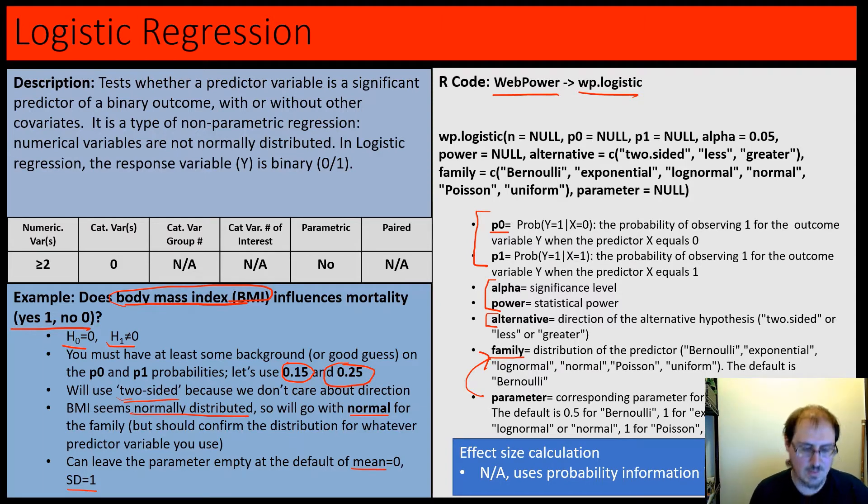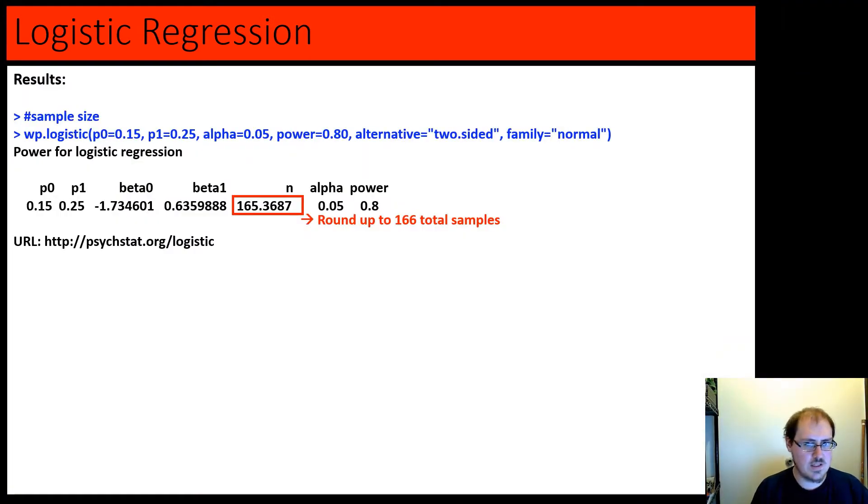The parameter is the corresponding parameters for our family - the default is mean of zero and standard deviation of one. So wp.logistic with our p0 probability, p1 probability, alpha and power, alternative two-sided, and normal family spits out a lot of things, but the n here is our sample size - it rounds up to 166 total samples.